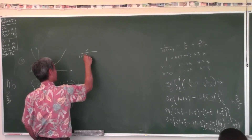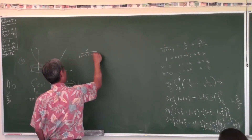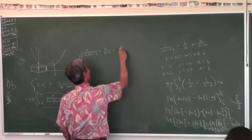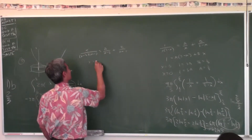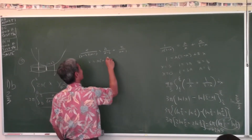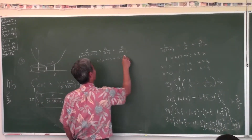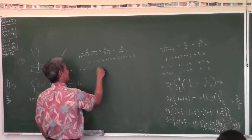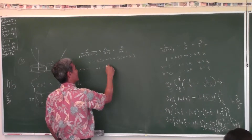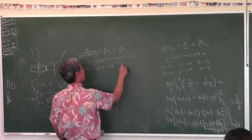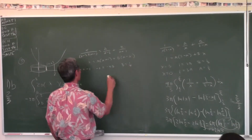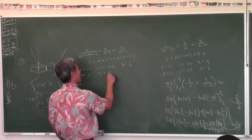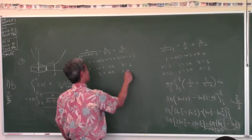Set up partial fractions: X over (X minus 3)(X plus 1) equals A over (X minus 3) plus B over (X plus 1). Multiply both sides by the LCD. Plug in negative 1: you get negative 1 equals negative 4B, so B equals 1/4. Plug in 3: you get 3 equals 4A, so A equals 3/4.